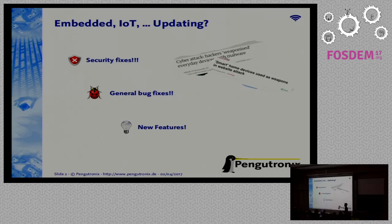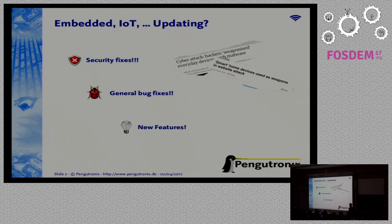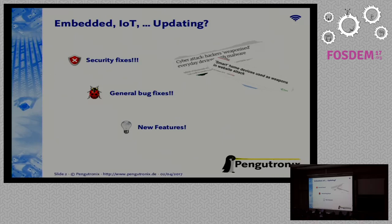So, embedded IoT stuff — do we really need updates for this kind of topic? And the answer of course is yes. At least the events that took place in October last year, when those small IoT devices broke down parts of the internet, showed the last person that security — especially for these devices that become more and more connected to the internet and infrastructure — is a topic of high priority. Connected with security there is always the need for updating, because if we detect a security hole somewhere we have to update the device. Other reasons for updating are fixing bugs if the software does not perform as expected, or if we want to add new features to an existing device.